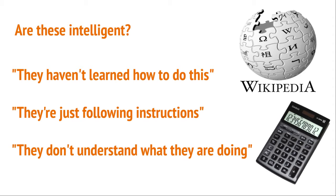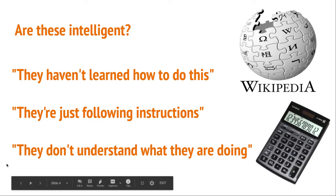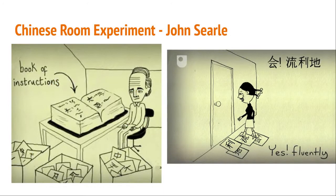To consider whether strong AI is even possible, let's think about an example created by a mathematician and philosopher called John Searle. He asked us to imagine the following situation: imagine that I'm sitting in a room with lots of boxes of Chinese characters written on bits of paper, and a big book of instructions — that's what's happening in this left-hand picture. Now, I don't understand the Chinese language.